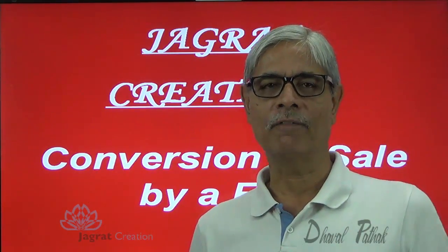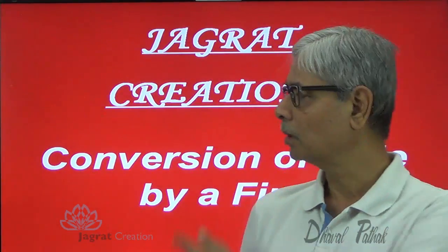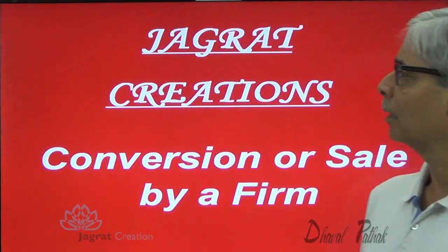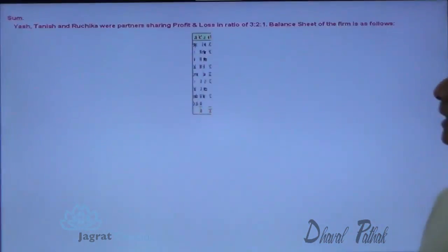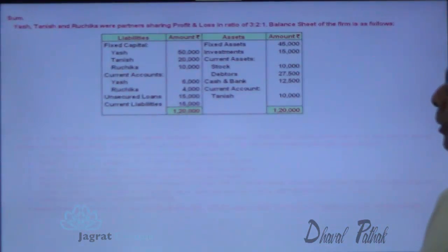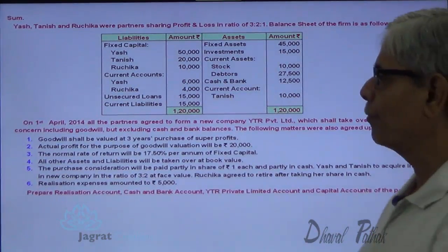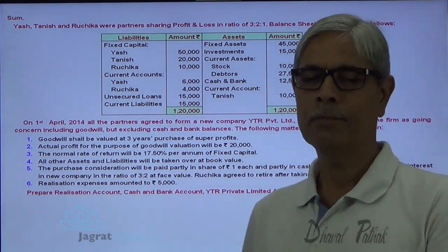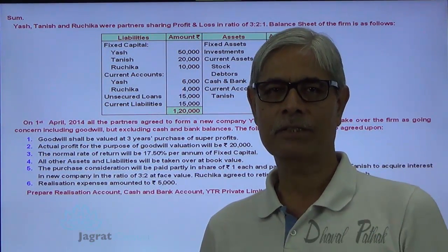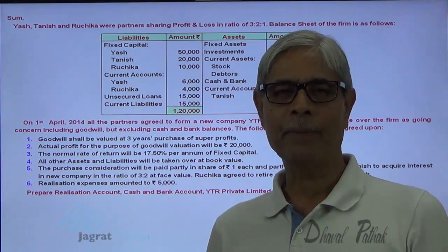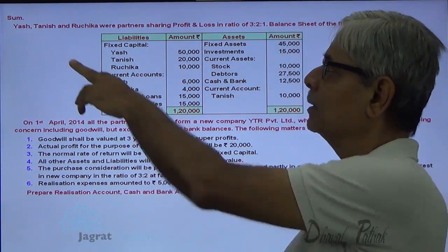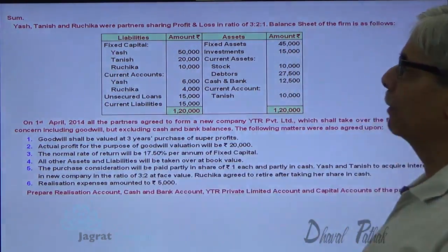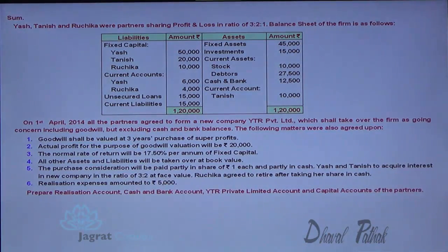I want to solve one sum on this chapter. Just look at the sum that I intend to solve here before you. This sum was asked in the IPCC recent examination. Yash, Tanish and Ruchika were partners sharing profits and losses in the ratio of 3 to 2 to 1.